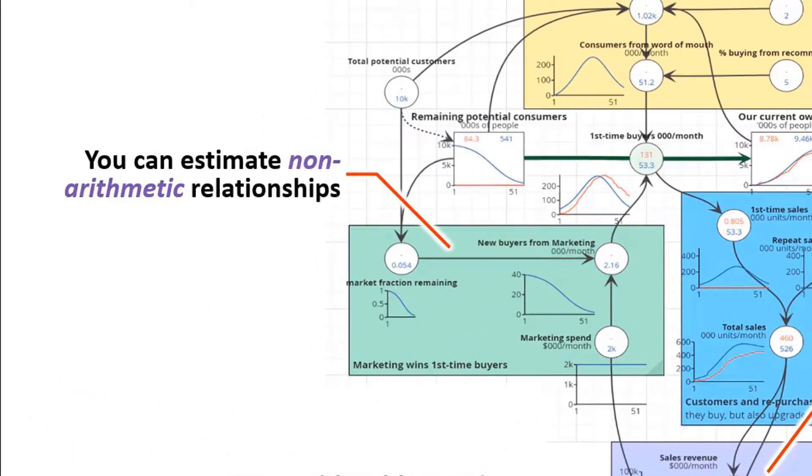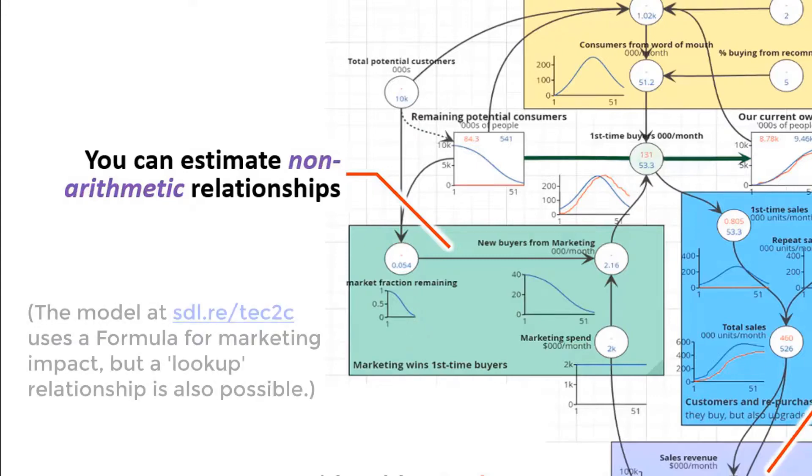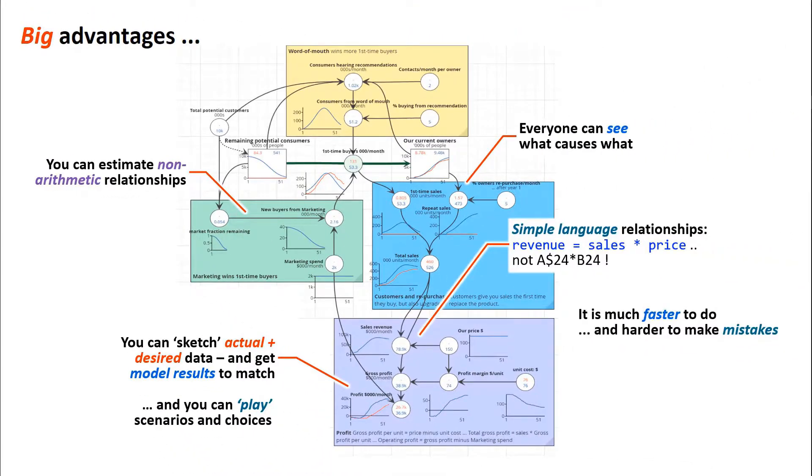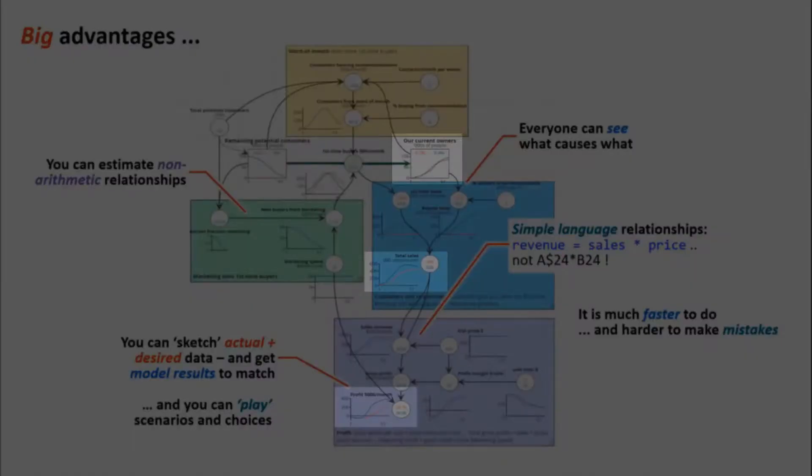Sometimes we don't have arithmetical relationships between things. We just know, for example, that as we spend more money on marketing we will gradually reach a larger fraction of the potential customers, but it's not an arithmetical relationship. It's a kind of sophisticated lookup relationship, much more powerful than you can do in spreadsheets. You can simply sketch how you think marketing reach varies as you spend more money on marketing. All of this is much faster to do with a good modeling tool than you could ever do with spreadsheets, and it's much harder to make mistakes.